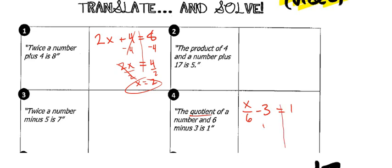To solve, add three, add three, cancel out, bring down the x over six, put the equal sign, one plus three is four. Since that's dividing, we multiply by six and get x equals twenty-four.